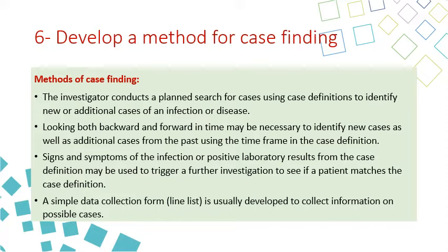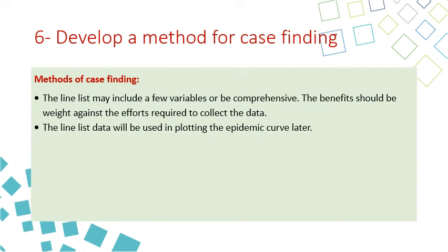Signs, symptoms, or positive laboratory results from the case definition may be used to trigger further investigation to see if a patient matches the case definition. A simple data collection form called a line list is usually developed to collect information on possible cases. The line list may include a few variables or be comprehensive; the benefits should be weighed against the efforts required to collect data. Line list data will later be used to plot the epidemic curve.